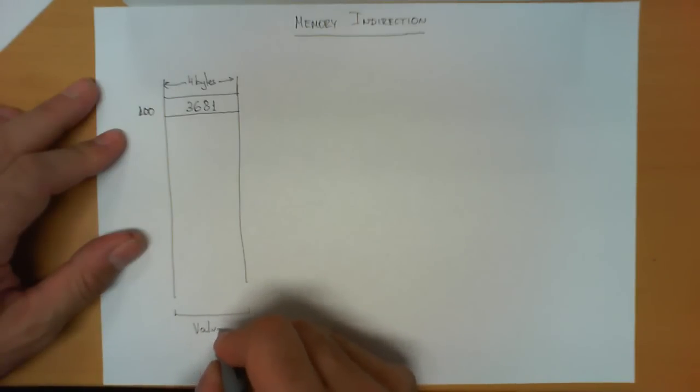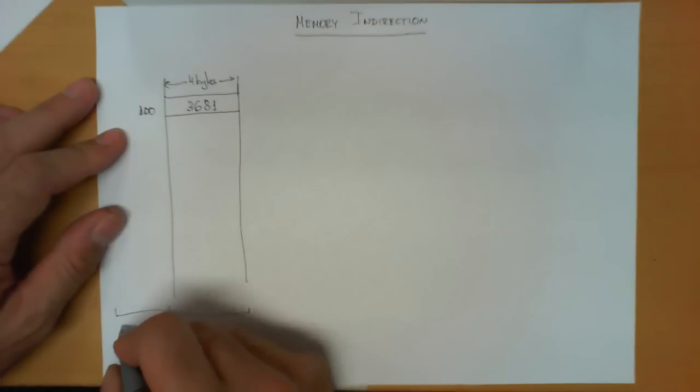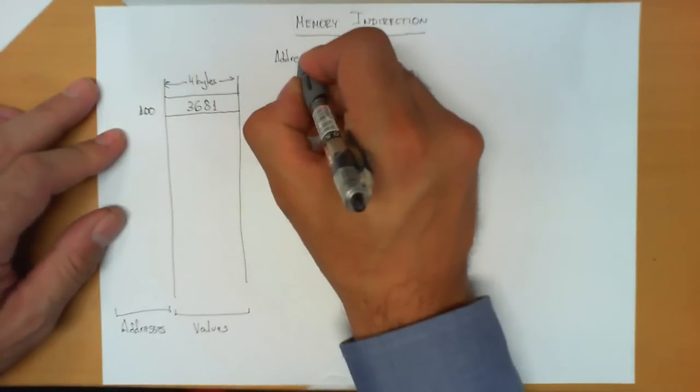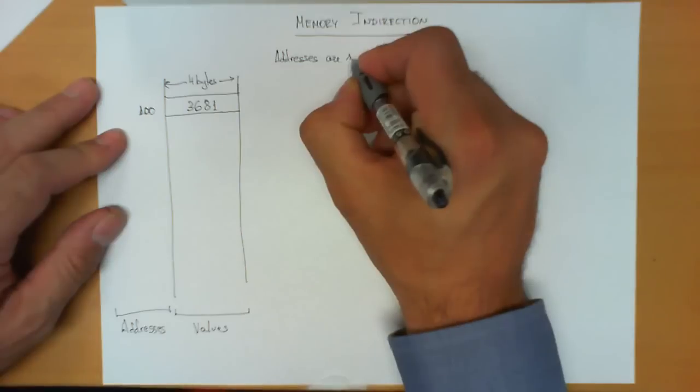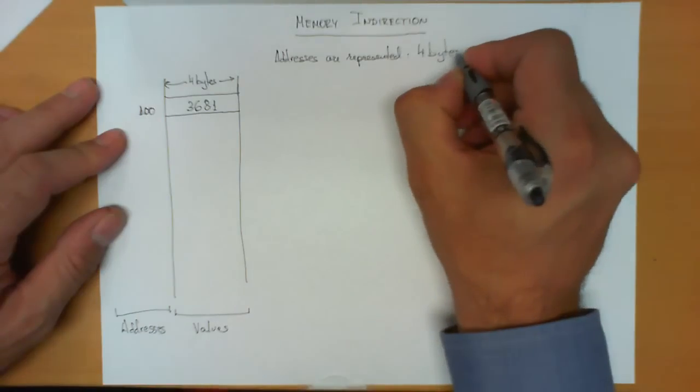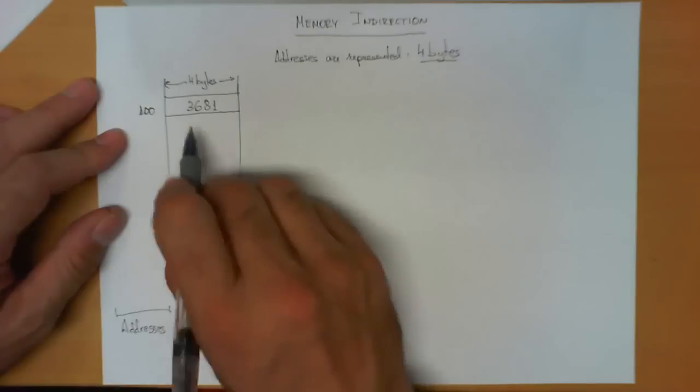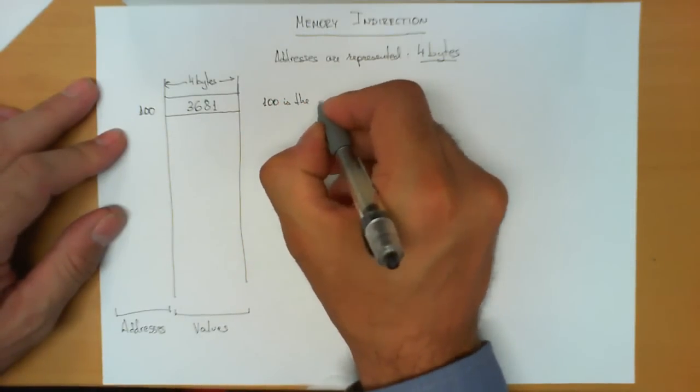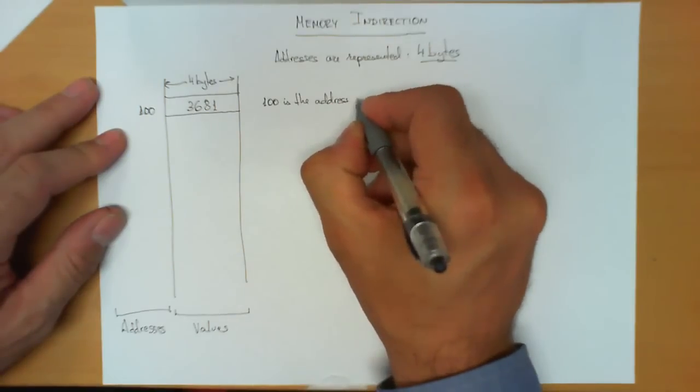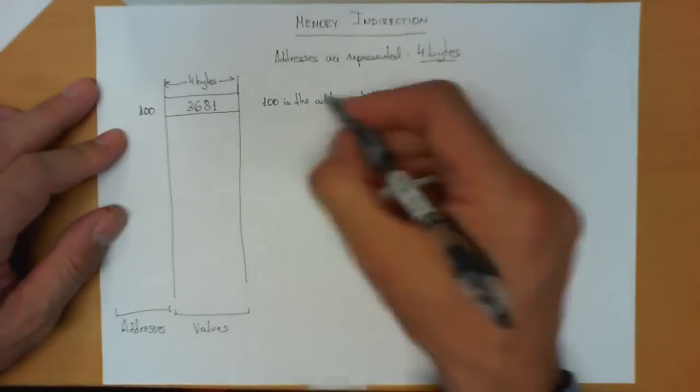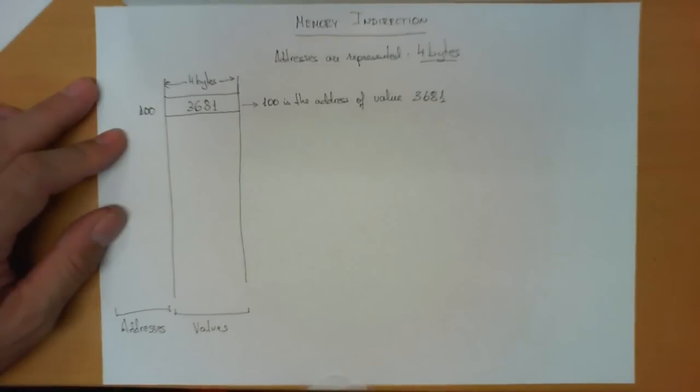Now, as with all memories, what we have stored there are values, and each of these cells can be referred to with an address. We're going to make one more assumption, which is that the addresses of this memory are represented using numbers encoded with four bytes. With these assumptions, what we can state is that 100 is the address at which the value 3681 is stored, or simply 100 is the address of value 3681. Fairly trivial, and this is what we have been seeing so far.